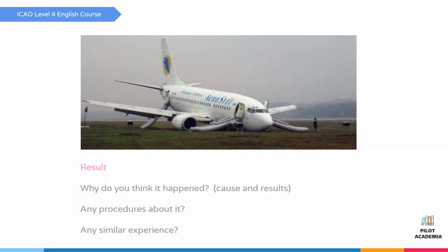Then the result — the final part of our technique. We talk about why you think it happened: cause, results, procedures, and any similar experience. As a result, it looks like a runway excursion due to very foggy weather. The most possible reason for this incident is visibility. There are certain strict rules for pilots, especially for low visibility approaches. We have to know and apply all these rules to avoid this kind of incident.